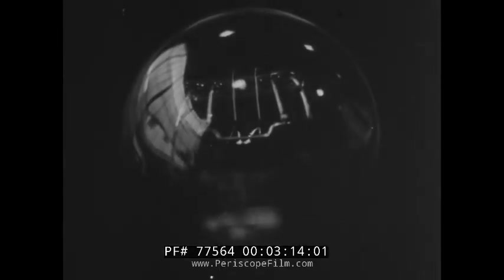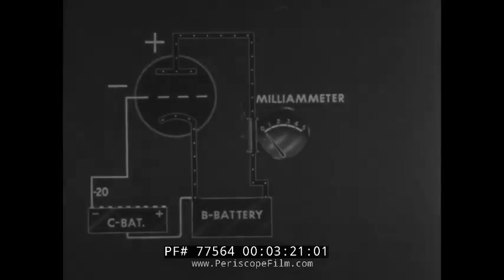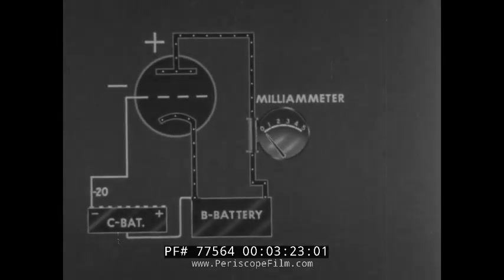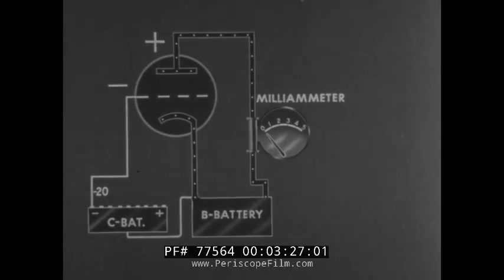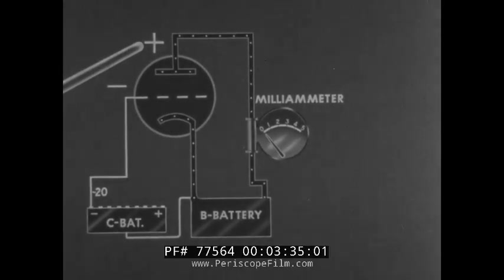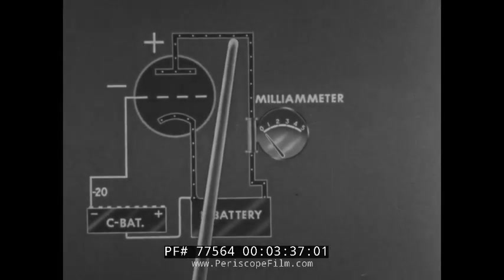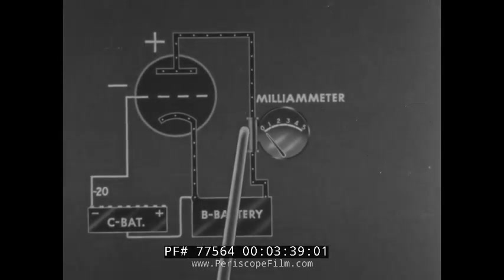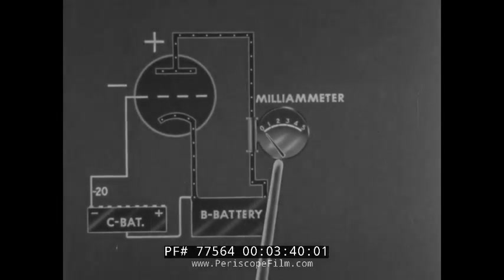The grid thus serves to control electron flow from a heated cathode to the positively charged plate. This circuit represents a hookup to test the effect of grid bias on plate current. With the grid negative, well below the cutoff point, and the plate positively charged by the battery, no current is seen to flow around the plate circuit and through the milliamp meter.